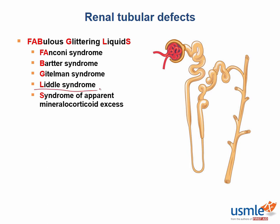Liddle syndrome results in increased reabsorption of sodium in the distal collecting tubules, due to increased activity of the epithelial sodium channel. It is autosomal dominant and results in hypertension, causing decreased aldosterone levels due to negative feedback inhibition. Treatment for Liddle syndrome is amiloride, which blocks the overactive sodium channel.